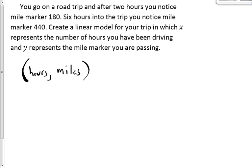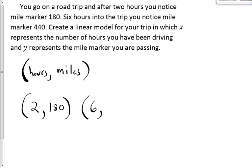Let's go ahead and create those ordered pairs. The first ordered pair: after two hours, the number of hours is two, and that matches up with mile marker 180. The next ordered pair: after six hours you notice mile marker 440. So now we have our two ordered pairs: (2, 180) and (6, 440).